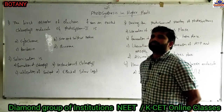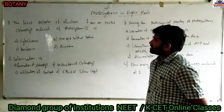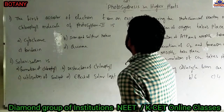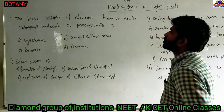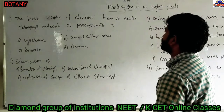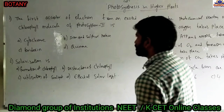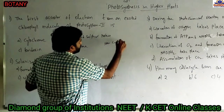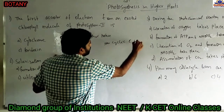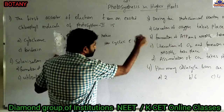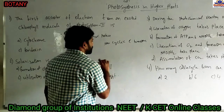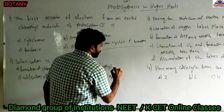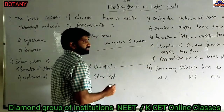Some of the remaining previous questions: Question 1 — the first acceptor of electron from an excited chlorophyll molecule of photosystem 2. This question is from the non-cyclic electron transport system. The electron transport system is placed in the thylakoid membrane — that is, in a thylakoid.